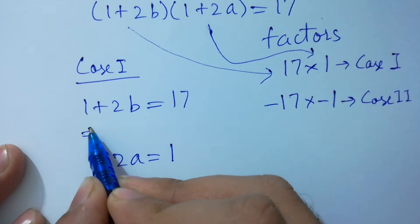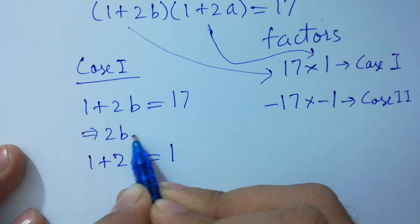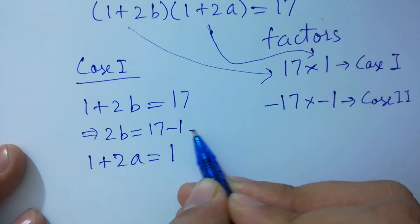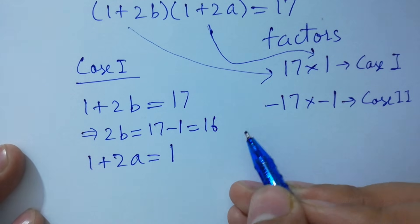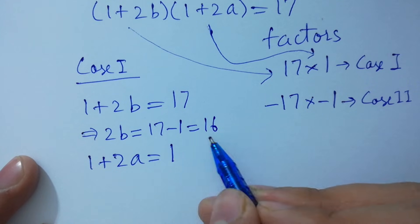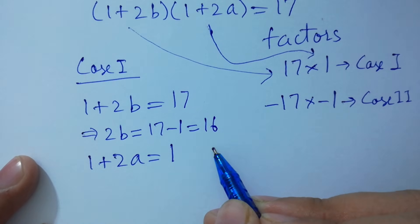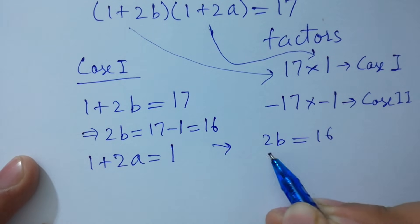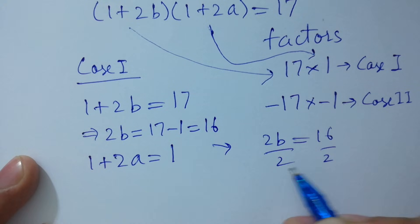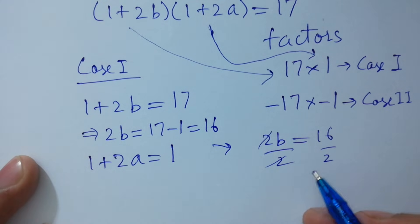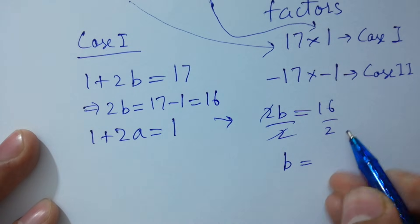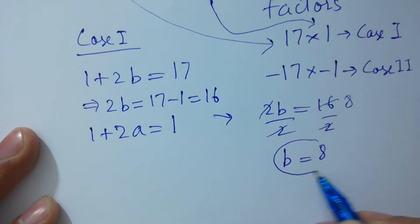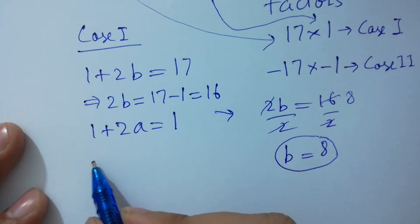Solving the first case: 2b equals 17 minus 1 equals 16. Dividing both sides by 2, the 2s cancel and we get b equals 8.